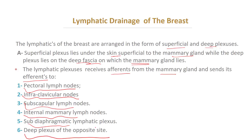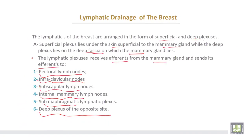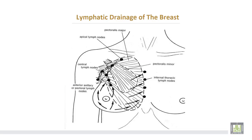Therefore, you should examine the other breast in any patient with a breast mass. Lymphatics drain via the superficial plexus, then to the deep plexus, and then to the different groups of lymph nodes in the area, including the internal mammary, subclavicular, and pectoral groups.